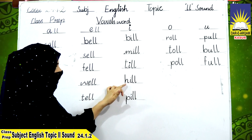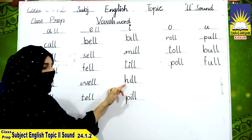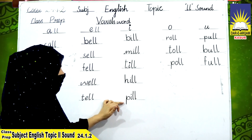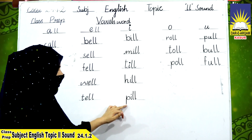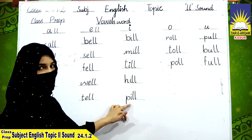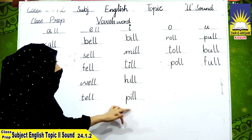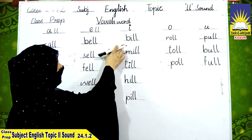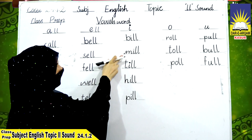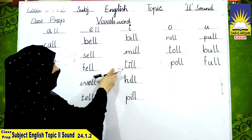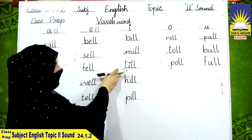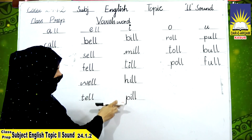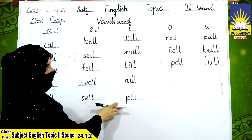H-I-L-L: hill — H, ill, hill. P-I-L-L: pill — P, ill, pill. Now we will repeat: B, ill — bill. M, ill — mill. T, ill — till. H, ill — hill. P, ill — pill.